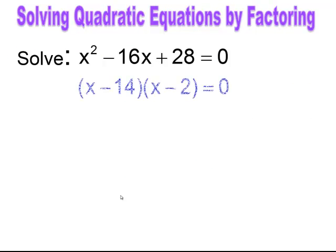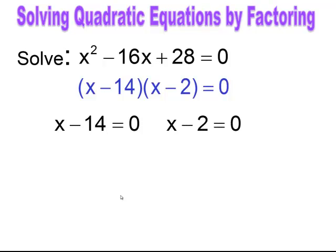It checks out — it's in standard form. I factor and get x minus 14 times x minus 2. I set each factor equal to zero and solve. My solutions are x equals positive 14 and x equals positive 2.